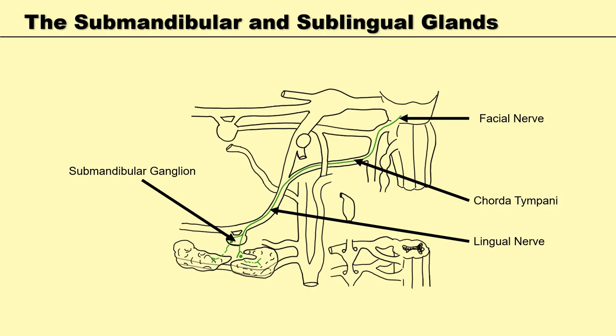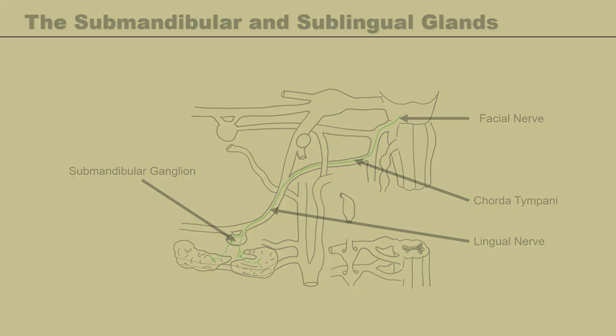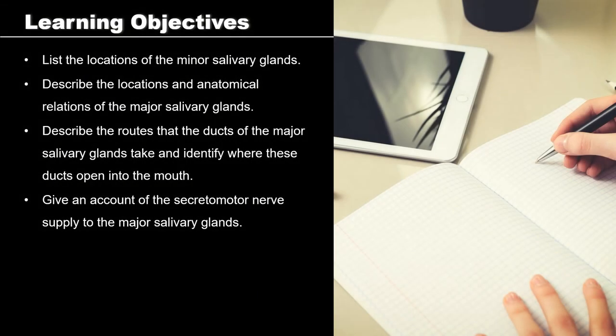So that's it — we've covered all of the learning objectives. We have briefly mentioned the minor salivary glands, looked in more detail at the major salivary glands, and covered the secretomotor innervation of the parotid, submandibular, and sublingual glands.